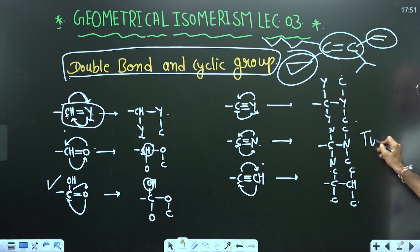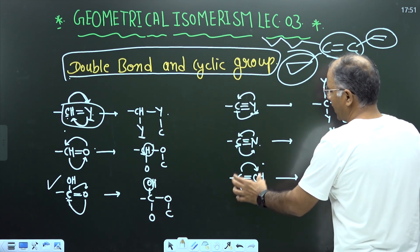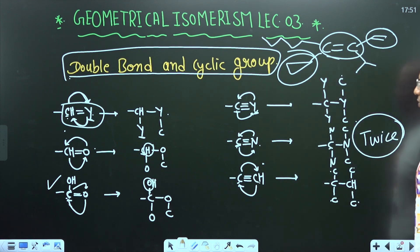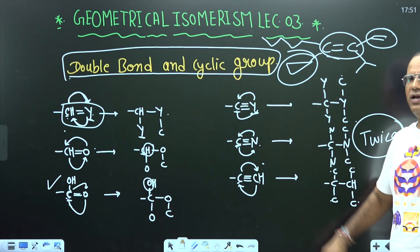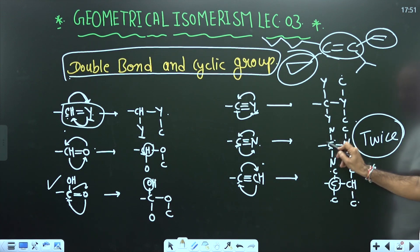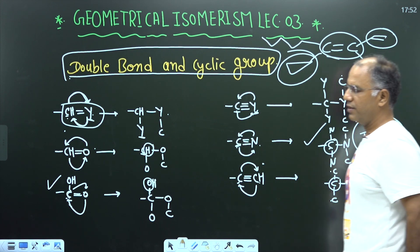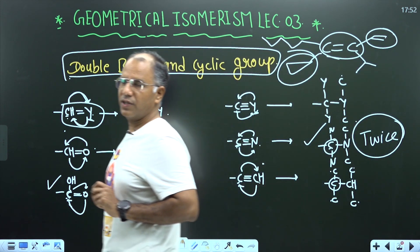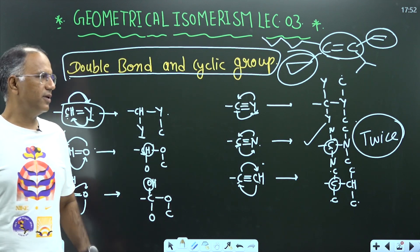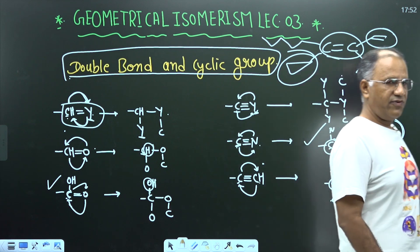Whenever there is a triple bond, you write the atoms twice. Now if I ask you to compare cyanide and alkyne, which will be given high priority? Cyanide will be given high priority because carbon is common and then there is a nitrogen, therefore cyanide is given priority over alkyne. Pause the video and write these examples, then we will go to cyclic compounds and try some examples.